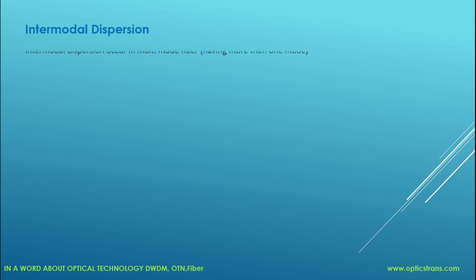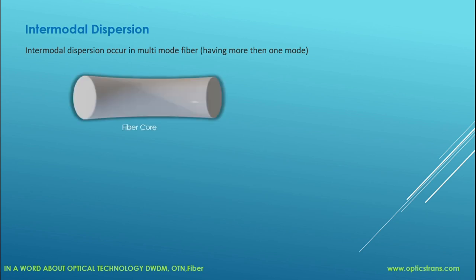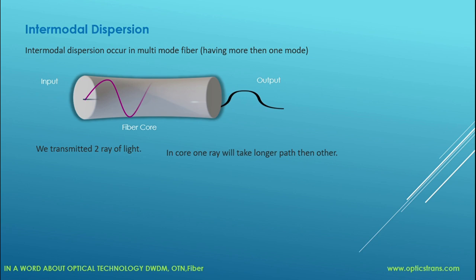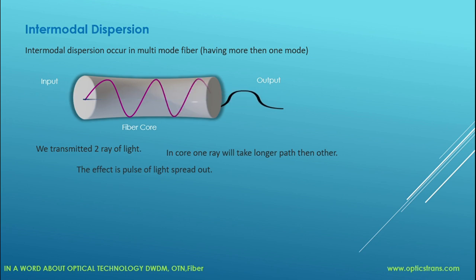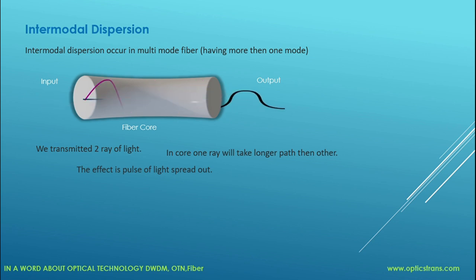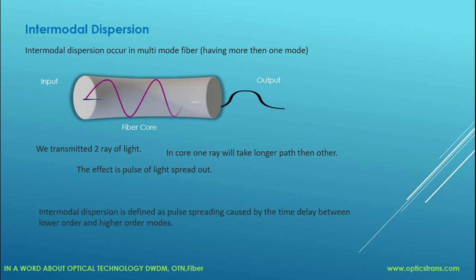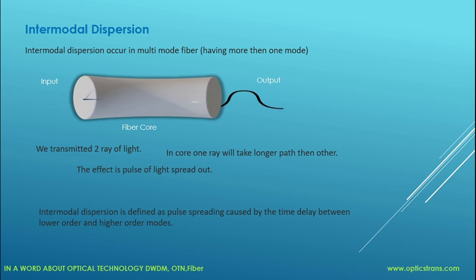Intermodal dispersion occurs in multi-mode fiber — a fiber having more than one mode. To understand this, we will use a fiber and transmit two rays of light. As you can see, one ray is taking a longer path than the other; due to this effect, the light pulse is spread out. So intermodal dispersion is defined as pulse spreading caused by the time delay between lower order and higher order modes.